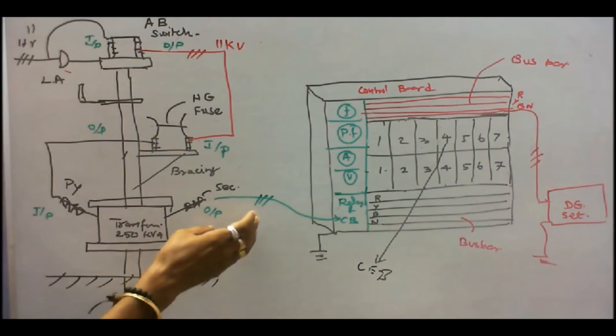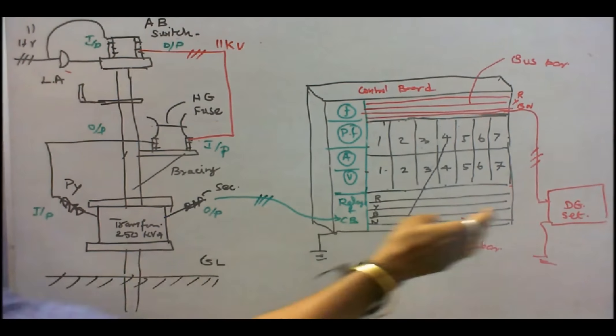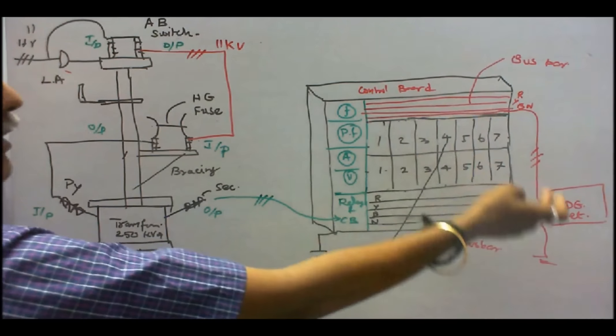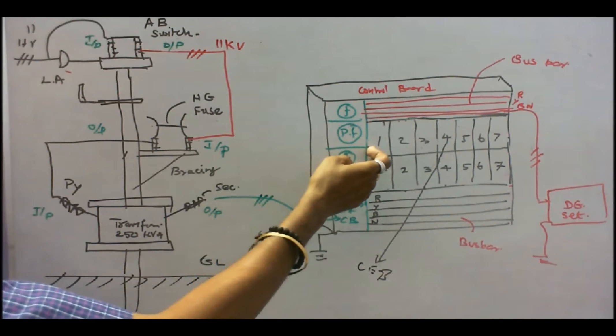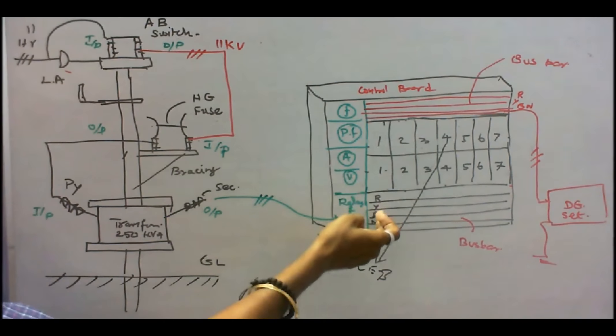Suppose you switch off the system. You energize the system. This is a bus bar. DG is in bus bar. This is a TNEB bus bar. Here this is a switch. Either I can operate the TNEB supply or switch off.